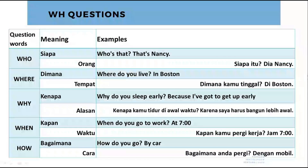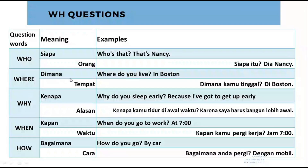Kita akan mempelajari the WH questions. Walaupun saya bilang ini gampang dan mungkin kalian bilang ini pelajaran SD, percaya lah masih banyak yang belum paham. Pertama ada 'who' — siapa, untuk menanyakan orang, berarti keterangannya berupa nama. 'Who's that?' Siapa itu? 'Who is the President of the United States of America?' 'Where?' Dimana? 'Where do you live? In Boston.' 'Why?' Kenapa? 'Why do you sleep early? Because I have to get up early.' Berarti jawabannya berupa alasan. 'When?' Kapan? 'When do you go to work? At seven.' 'How?' Bagaimana? 'How do you go? By car.'